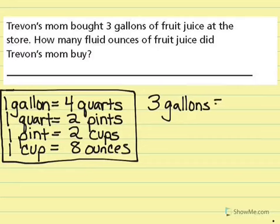I'm trying to figure out how many fluid ounces that is. So one gallon is 4 quarts. One quart is 2 pints. One pint is 2 cups. One cup is 8 ounces. So I've got some work to do here.